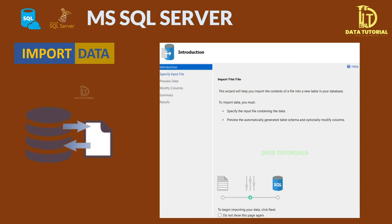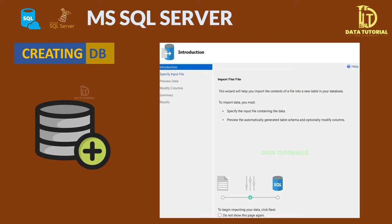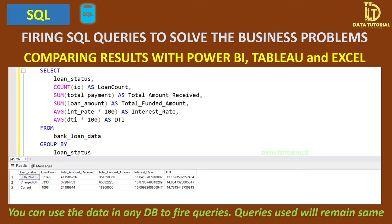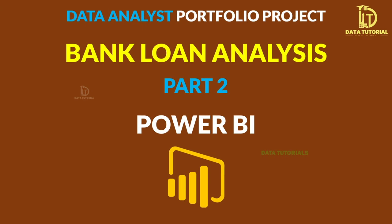In MS SQL Server, we will first import the data, create a database, write SQL queries based on the problem statement, generate results, and store them in a document. By firing SQL queries against different business problems, we'll compare results with the dashboards built in Power BI and Excel. Most standard ANSI SQL functions will work across other databases, though some date functions may need adjustment.